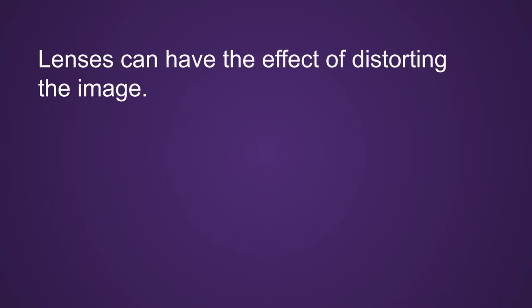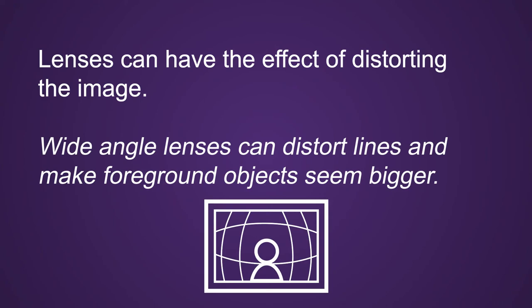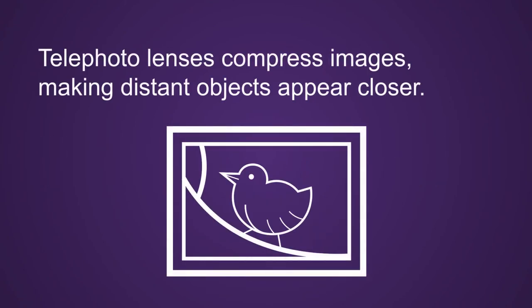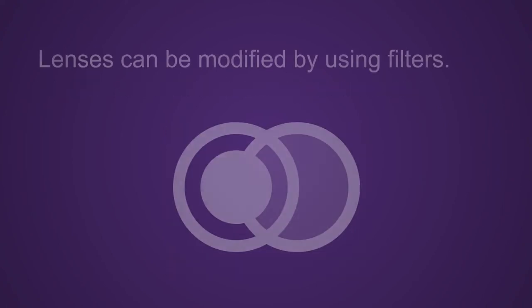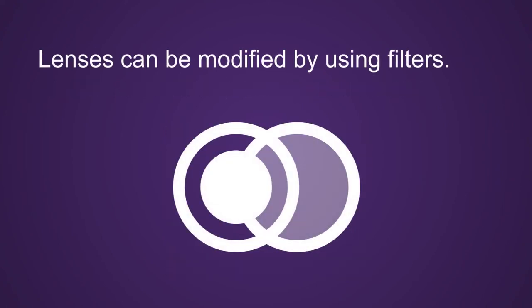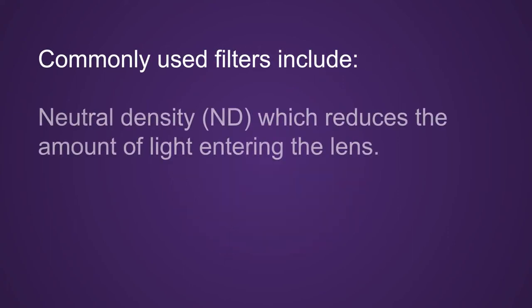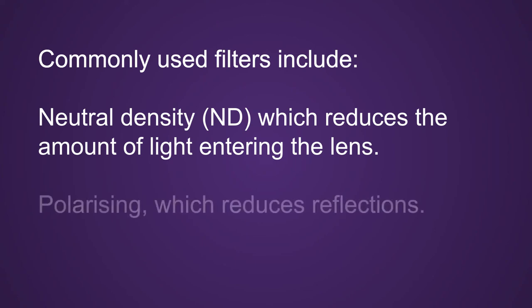Lenses can have the effect of distorting the image. Wide-angle lenses can distort lines and make foreground objects appear bigger, while telephoto lenses compress images making distant objects appear closer. Lenses can be modified using filters — commonly used filters include neutral density, which reduces the amount of light entering the lens, and polarizing, which reduces reflections.